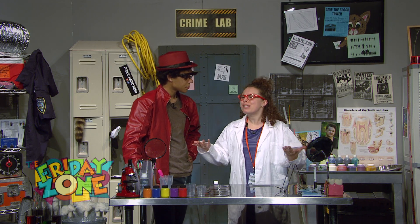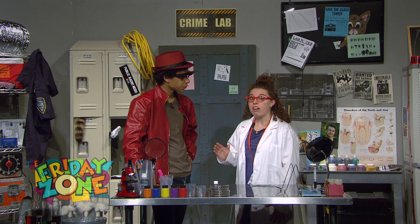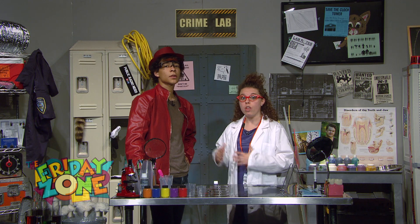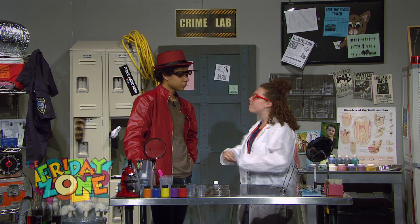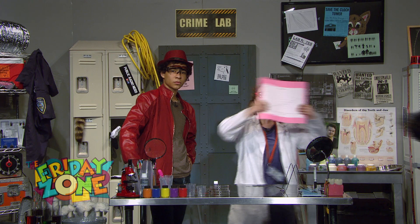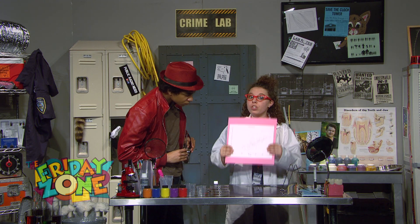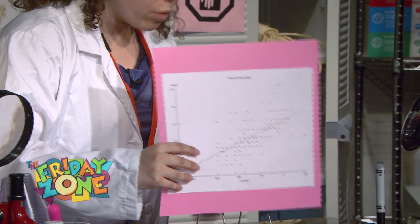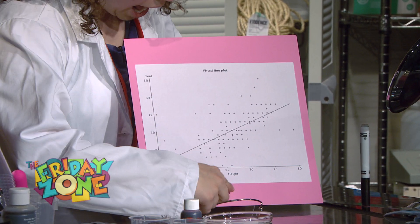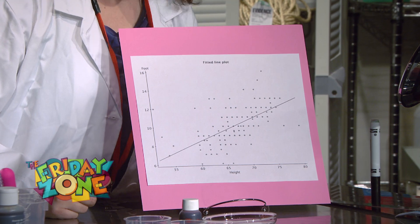What is that? It's just some simple math, Sammy. The suspect was barefoot, so we can look at the feet and see how tall they are. Take a look at this graph — it's called a scatterplot. It shows a correlation, meaning a relationship between foot size and height. This line shows the statistical average.